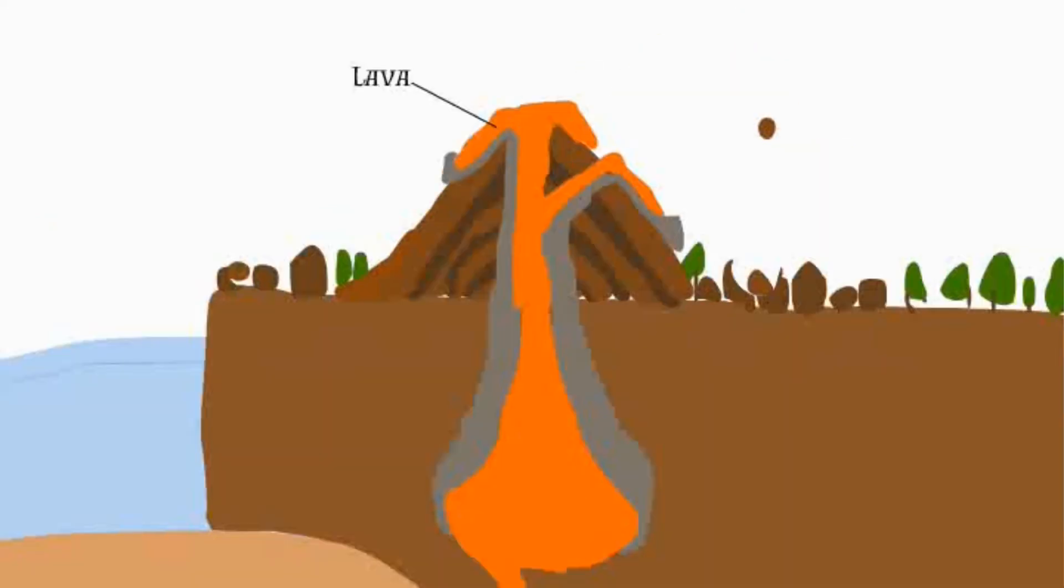During the eruption lava will run down the side of the volcano from either the secondary vent or the main vent. It can then cool down to form volcanic bombs which can then fall and hit you.